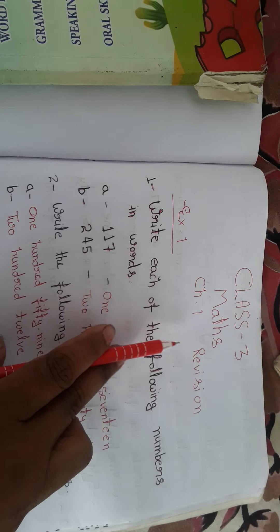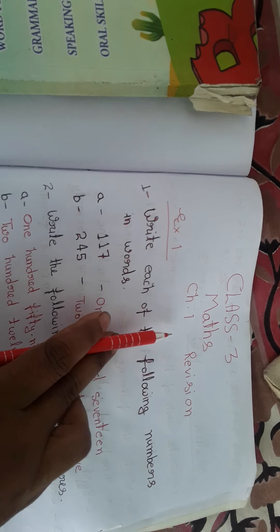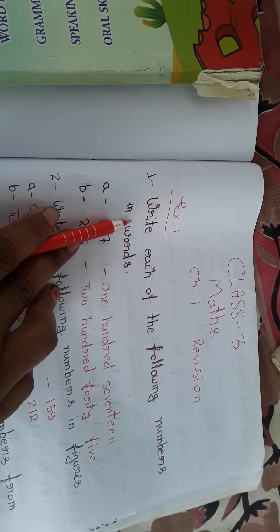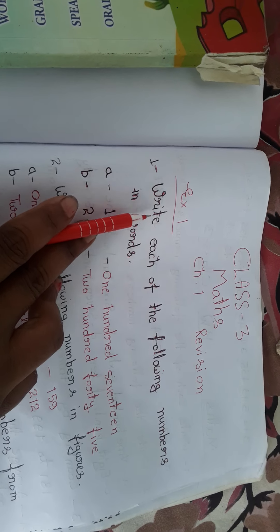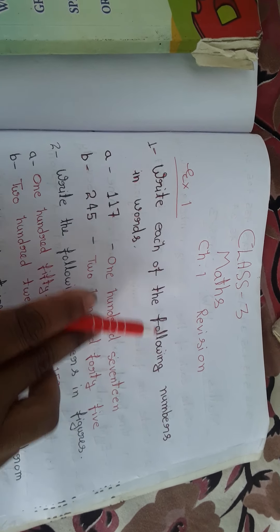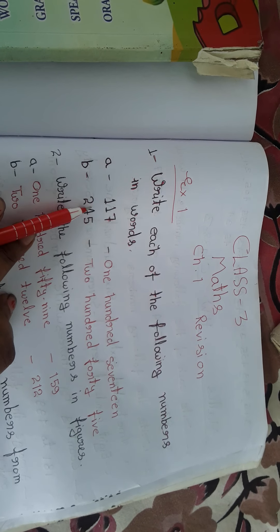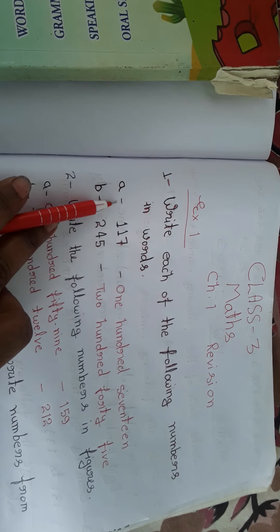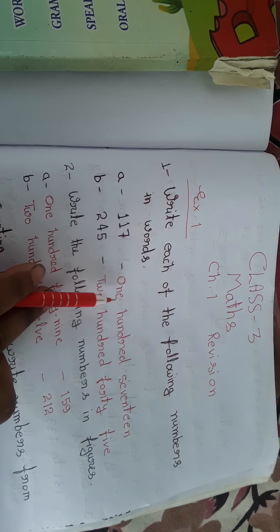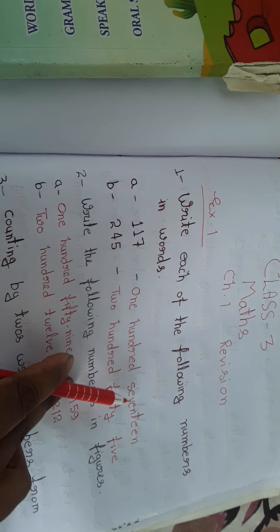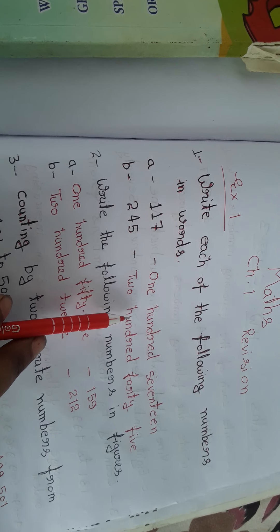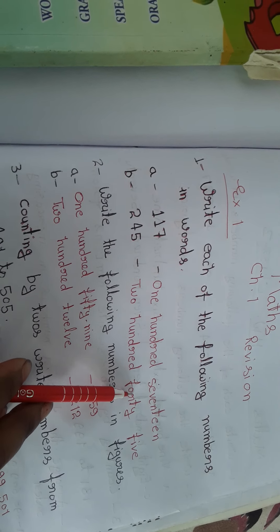Good morning students. I teach you maths for class third, chapter one, division, exercise one, question number one. Write each of the following numbers in words. We write: 117 as one hundred seventeen, 172 as one hundred seventy-two, 245 as two hundred forty-five.